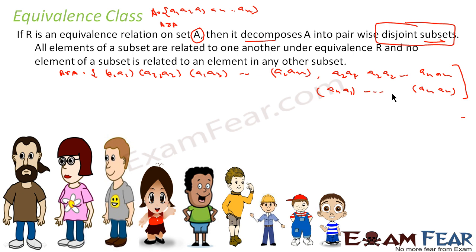Now, a relation is nothing but a subset of A cross A. The concept of equivalence class requires, first, that the relation must be an equivalence relation — meaning it has to be reflexive, symmetric, and transitive. If it satisfies all three, it is an equivalence relation, and it decomposes the set into n number of subsets.